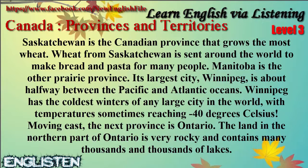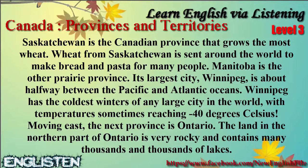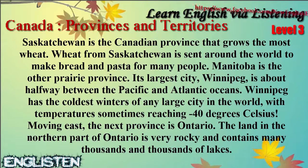Saskatchewan is the province that grows the most wheat. Wheat from Saskatchewan is sent around the world to make bread and pasta for many people. Manitoba is the other prairie province. Winnipeg has the coldest winters of any large city in the world, with temperatures sometimes reaching negative 40 degrees Celsius.